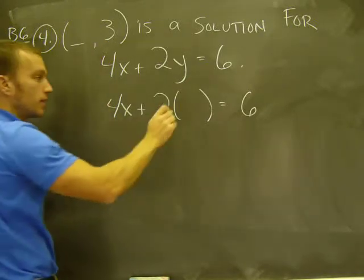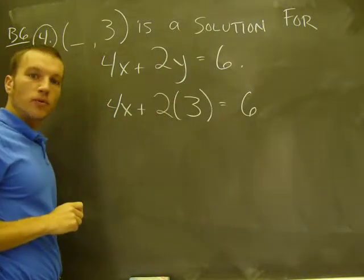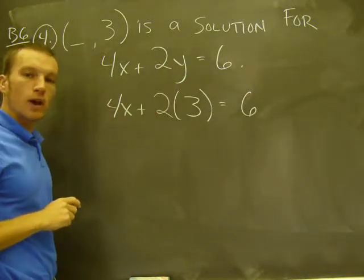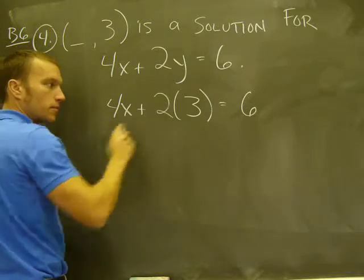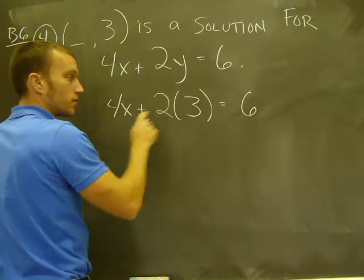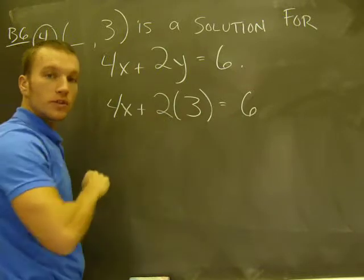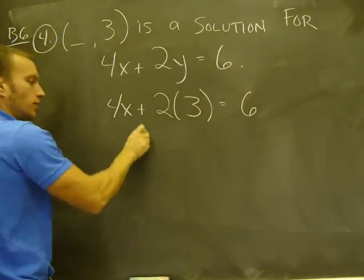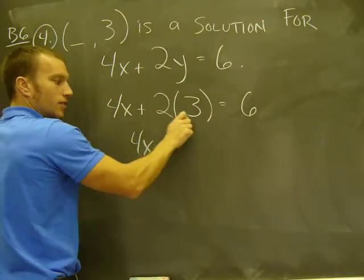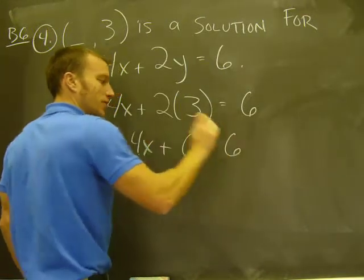I'm given y is 3, so I plug that value in. 4x plus 2y equals 6. 4x plus 2 times 3, which is my y value, equals 6.